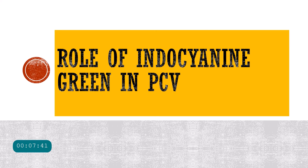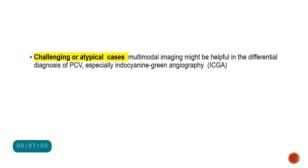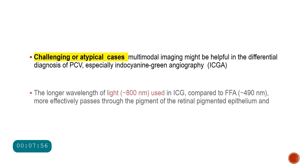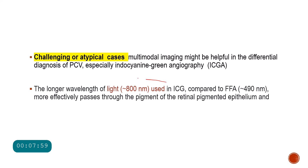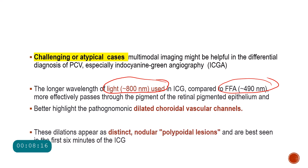The role of indocyanine green (ICG) in PCV: ICG is usually used in complicated, challenging, or atypical cases where multimodal imaging may help in differential diagnosis. ICG uses a larger wavelength of about 800 nanometers compared to fundus fluorescein angiography at about 490 nm. This longer wavelength passes through the pigment epithelium more easily and better highlights choroidal vascular details. The dilated choroidal vascular lesions and dilatations appear as very distinct nodular polyp lesions, specifically seen in the first six minutes of the ICG.